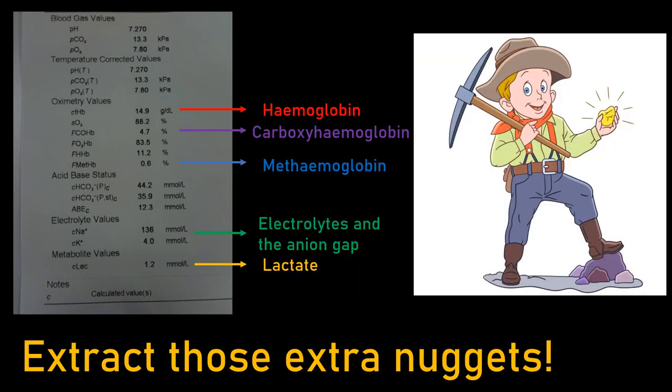Don't forget, partner, there are other golden nuggets on the printout, including electrolytes, which can help identify the cause of a metabolic acidosis through identifying the anion gap. This will be talked about in another video. Thanks for listening.